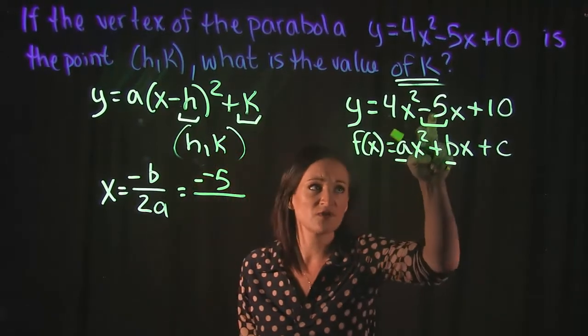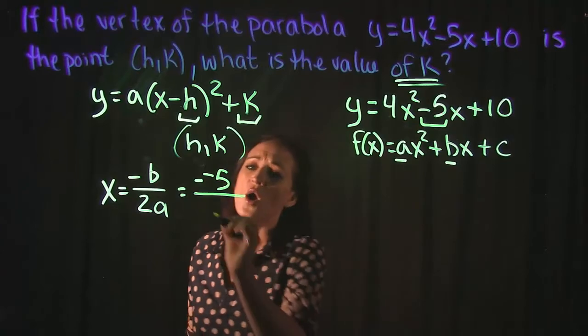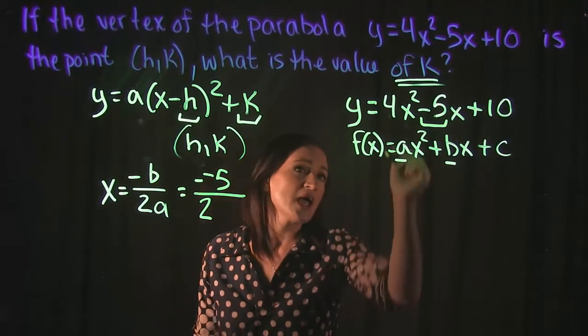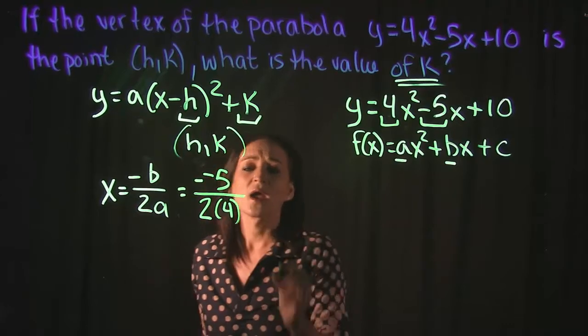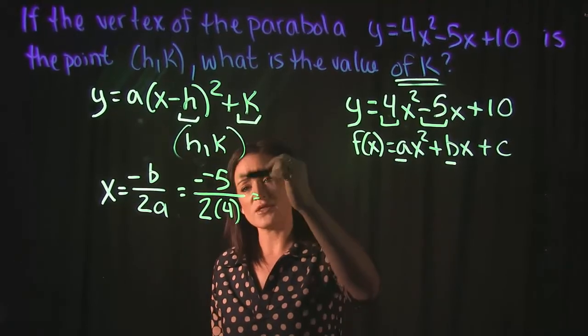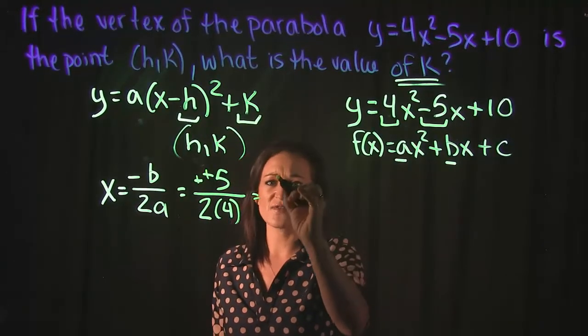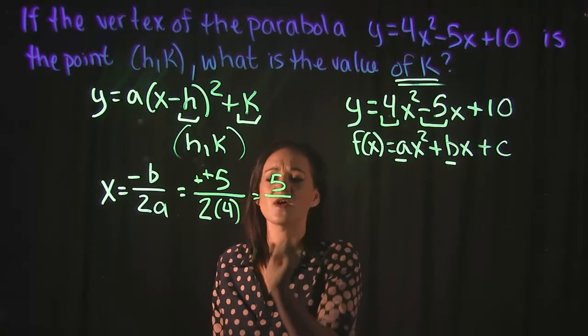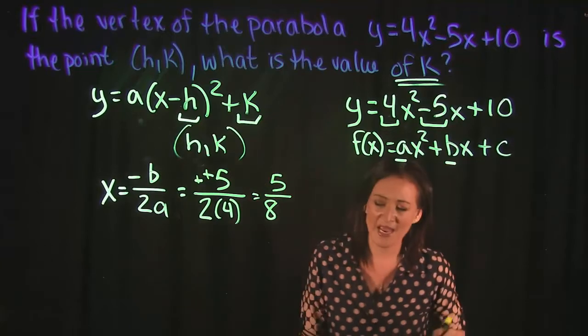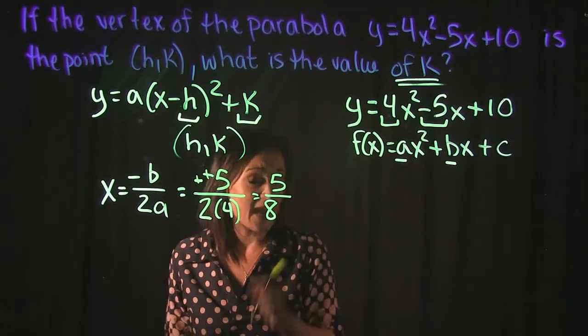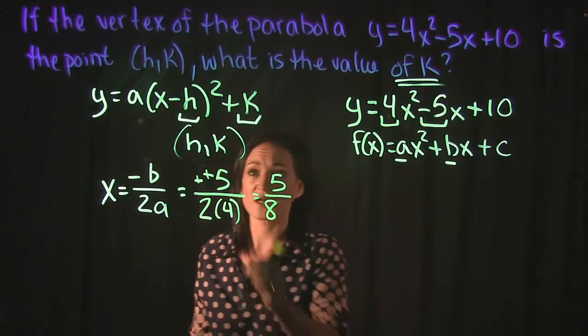Over 2a, and a for our equation is 4. So double negative rule in the numerator: minus that negative cancels out, leaving us with 5 over 2 times 4, which equals 5/8. So this is h of our formula.